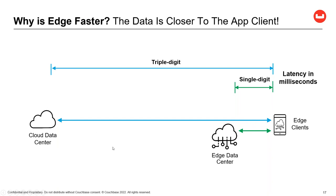Why is edge faster? Moving data closer to the application makes it quicker. We're seeing latency from cloud to edge at triple-digit milliseconds as data hops across the internet. By putting an edge data center out there with data on it, you can reduce that to single digits — a drastic reduction in processing time. You're not just moving data closer; you're eliminating all those hops across the internet and the unreliability that comes with not knowing how many hops the data will take.